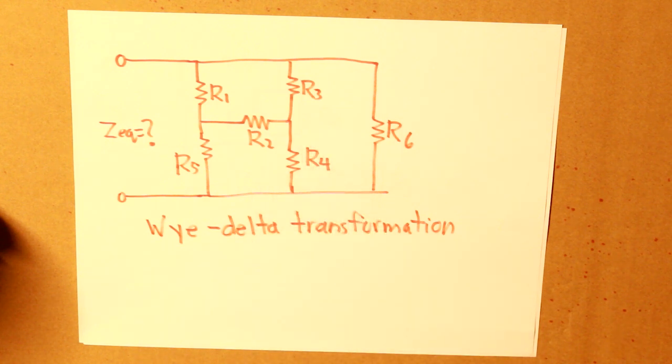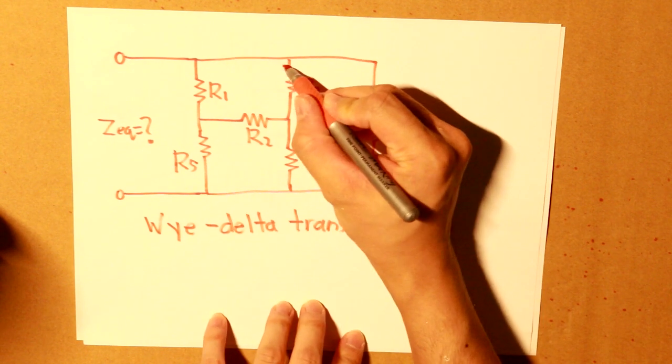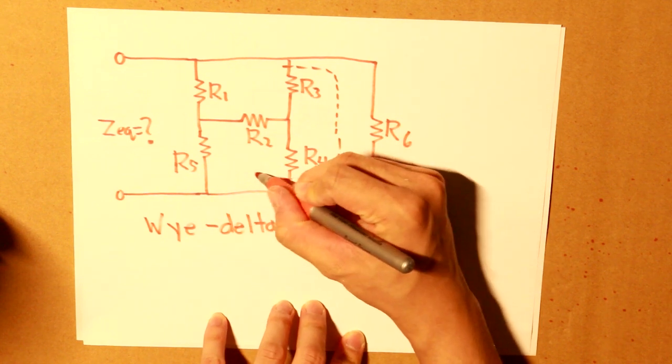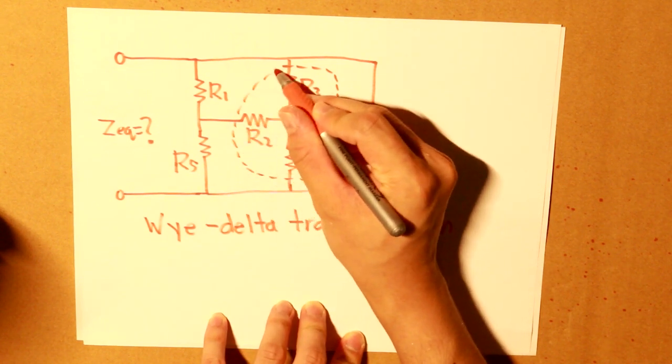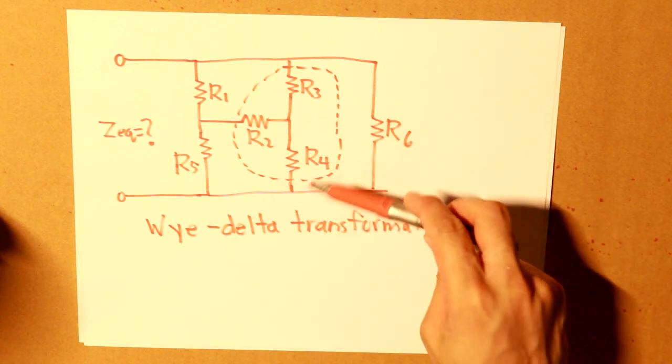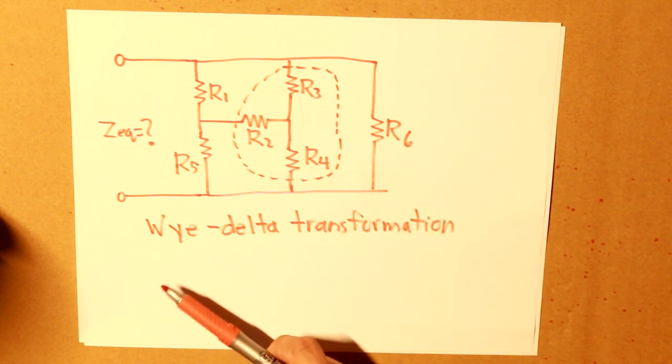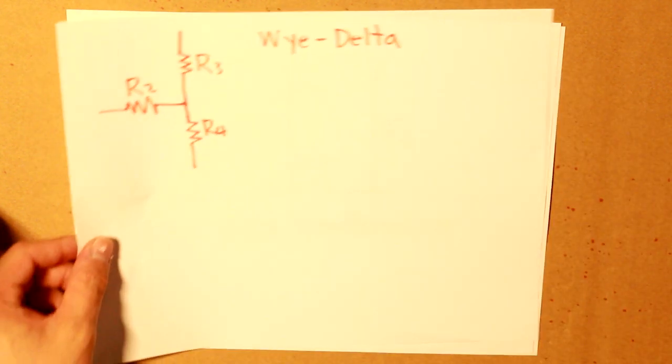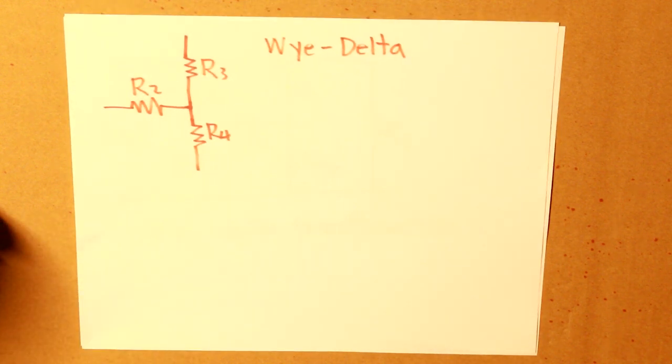Yes we do, and I'm going to highlight it to show you guys. So here it is: R2, R3, and R4. This resembles a Y connection. So utilizing the knowledge of Wye-Delta transformation, let's convert it to Delta.